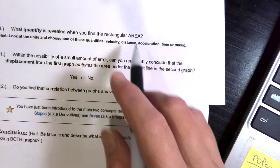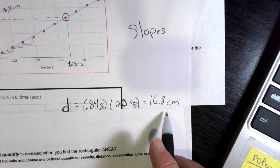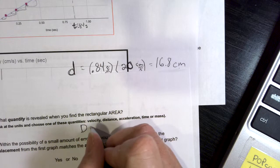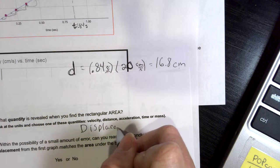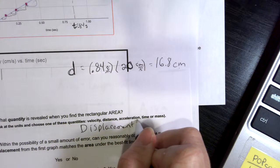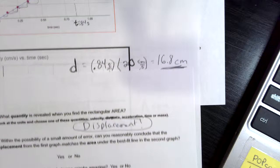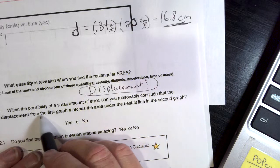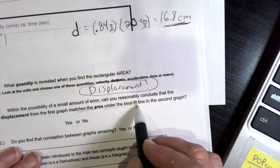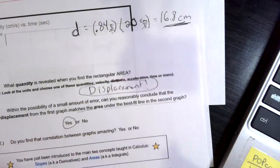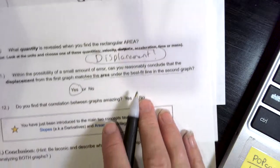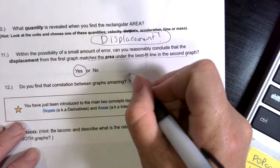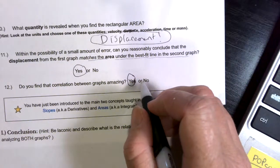So what quantity is revealed when you find the rectangular area? Look at the units. The displacement. Oh, I said distance. I've got to write displacement. You can put distance because it's in a straight line, but put displacement. Now, within the small possibility of error, can you reasonably conclude that the displacement from the first graph matches the area under the best fit line? Yes. Hopefully you can. Now, this is where, do you find a correlation between the graphs amazing? Hopefully you do. But I don't care. Either one. If you did, you're getting a gold star in your paper.